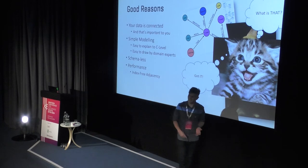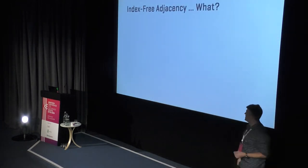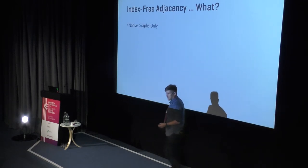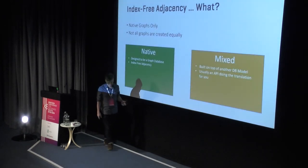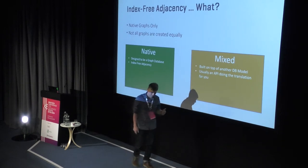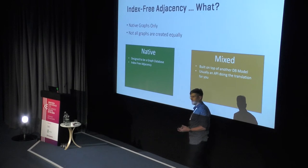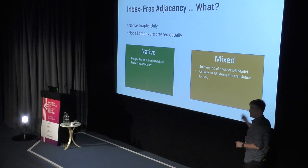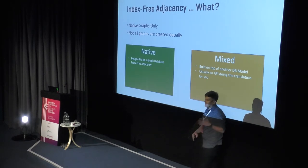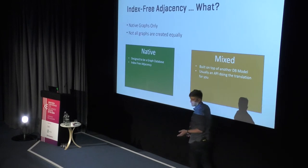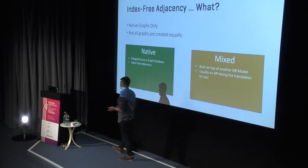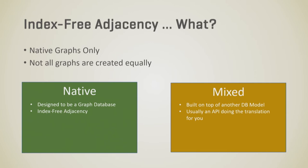The real key benefit is index-free adjacency — that's a performance thing. Adobe Behance, Adobe's social network for graphic artists, ran on 48 MongoDB instances and switched to three Neo4j instances. So from 48 servers to three — and that's all online to read about. Index-free adjacency only applies to native graphs, as opposed to mixed-mode graphs. Native graphs are built from the ground up to be graph databases. Mixed-mode ones like Neptune, Cosmos, and ArangoDB are built on top of another database — they're basically calling an API on top of it.